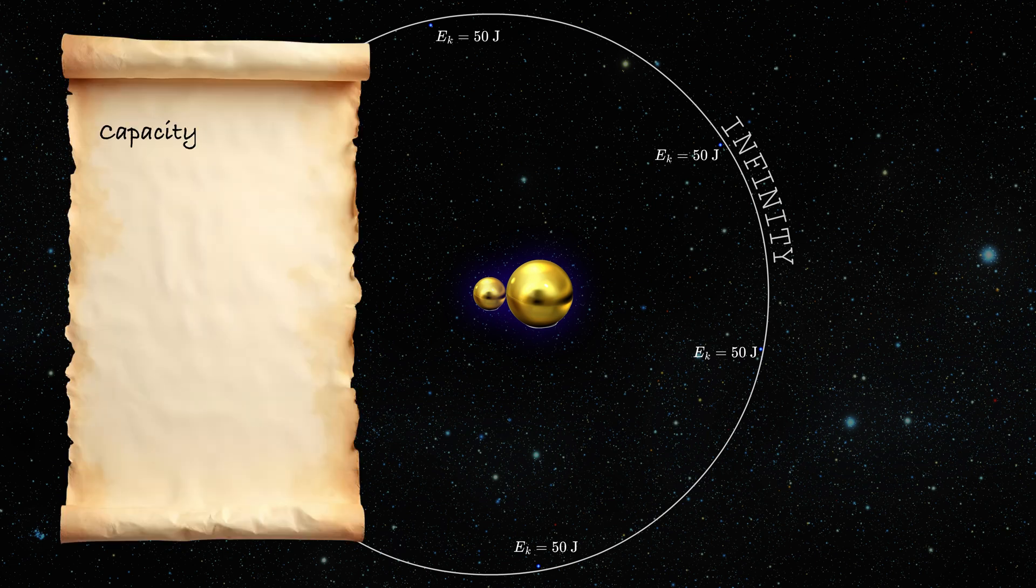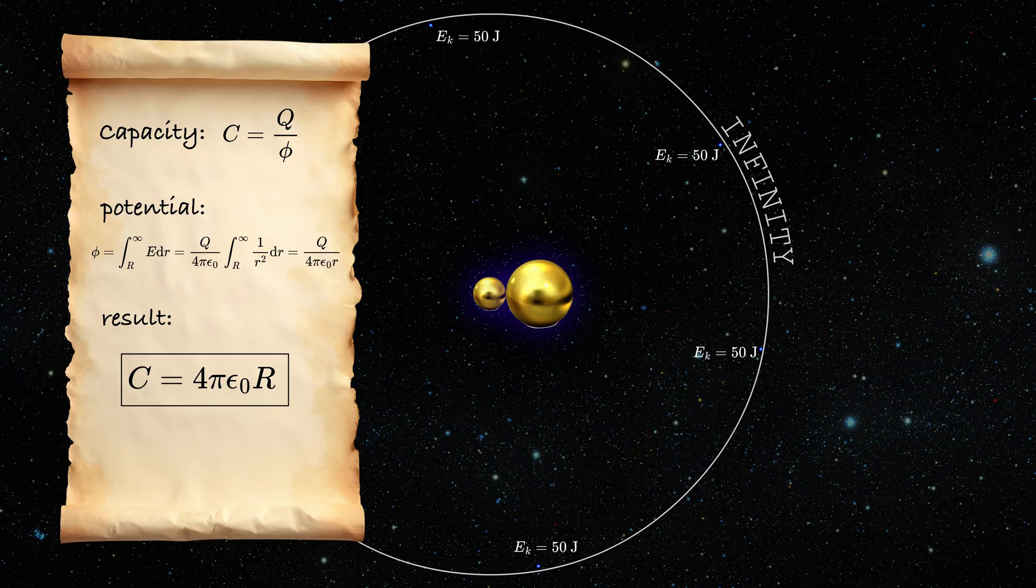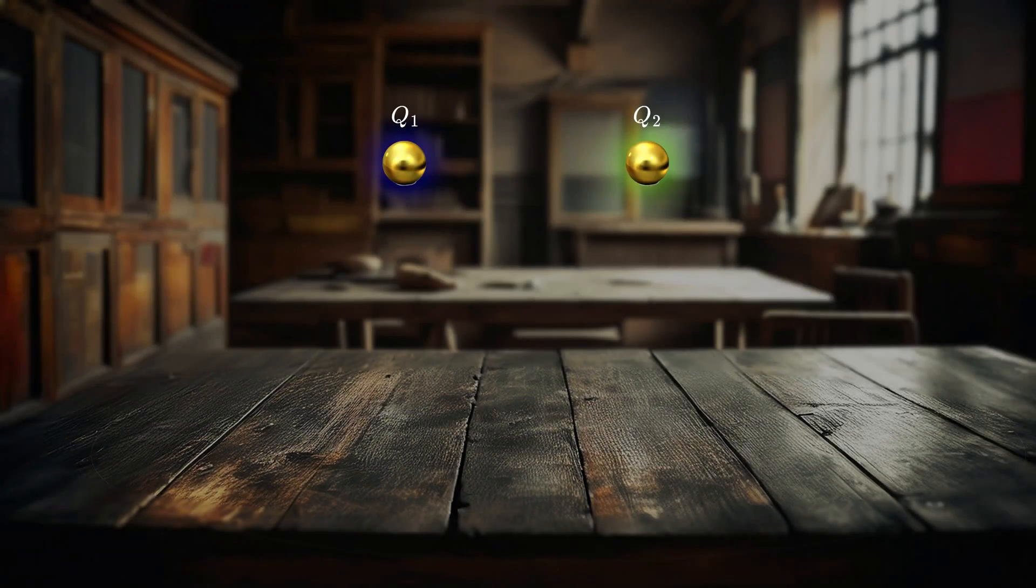If you account for this rule, you will get that the capacity of the metal ball to hold the charge is directly proportional to the first power of radius. This story might be worth another video, but anyway let's get back to the Coulomb's law. So you were able to find out that the force is directly proportional to the product of the two charges.